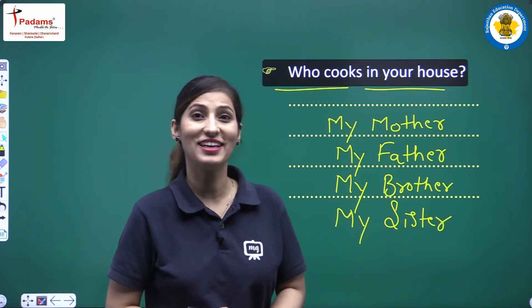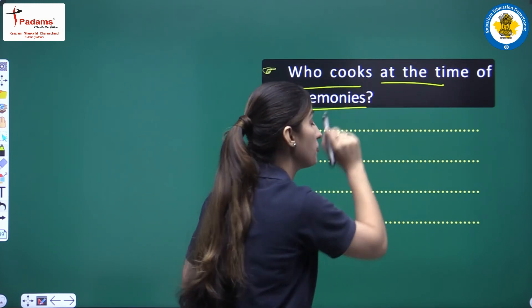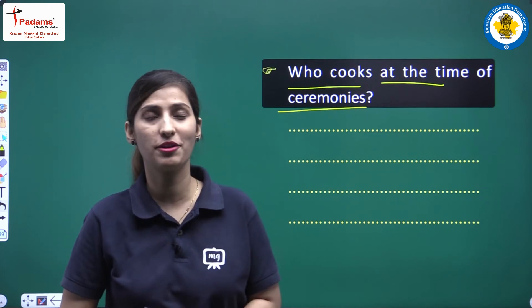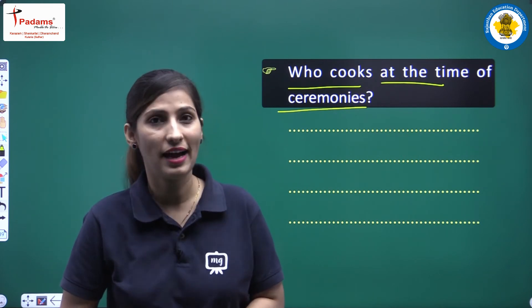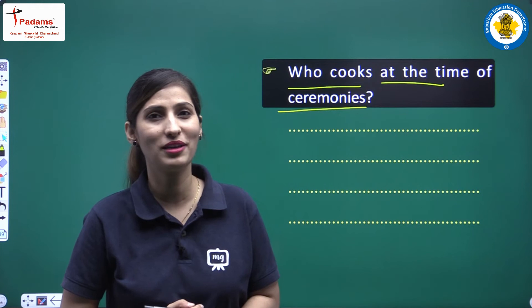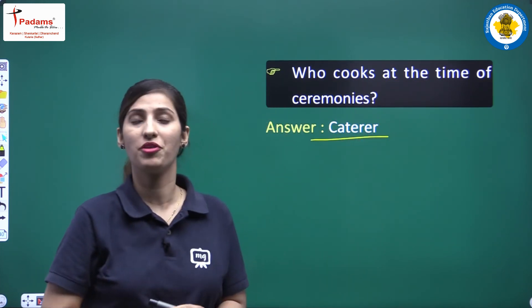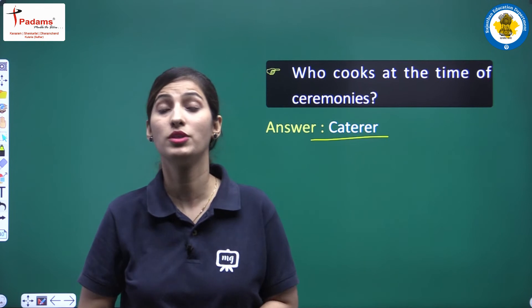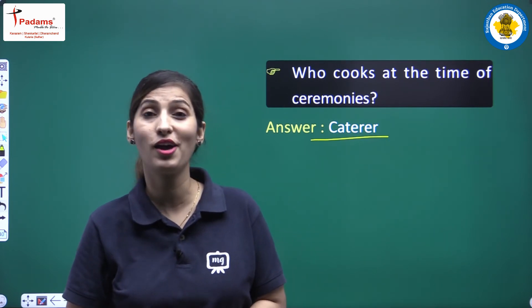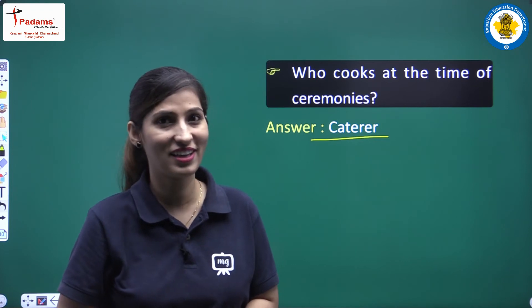Who cooks at the time of ceremonies? When there is a ceremony, we have to tell who cooks. The answer is a caterer, because here we are talking about mass cooking — badi level pe cooking hoti hai — so we need a caterer.